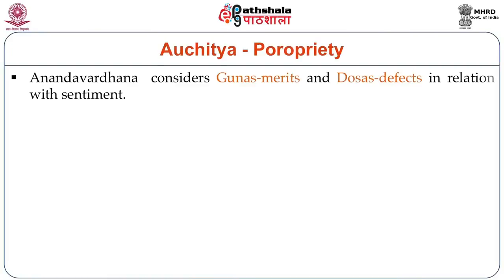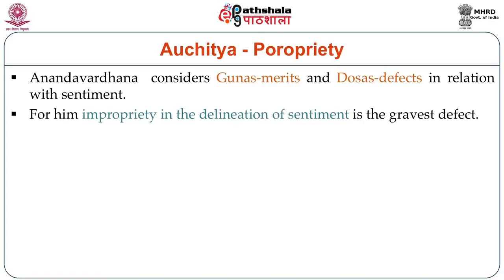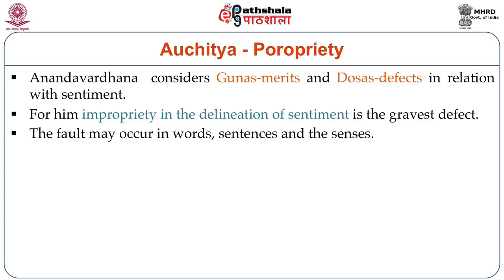Anandavardhana considers Gunas — the merits — and Doshas — the defects — in relation with the sentiment. For him, impropriety in the delineation of sentiment is the gravest defect. The fault may occur in words, sentences, and senses. Auchitya is the governing principle of Kavya — it governs Alankara, Guna, Shabda, everywhere, in each and every part of the Kavya.